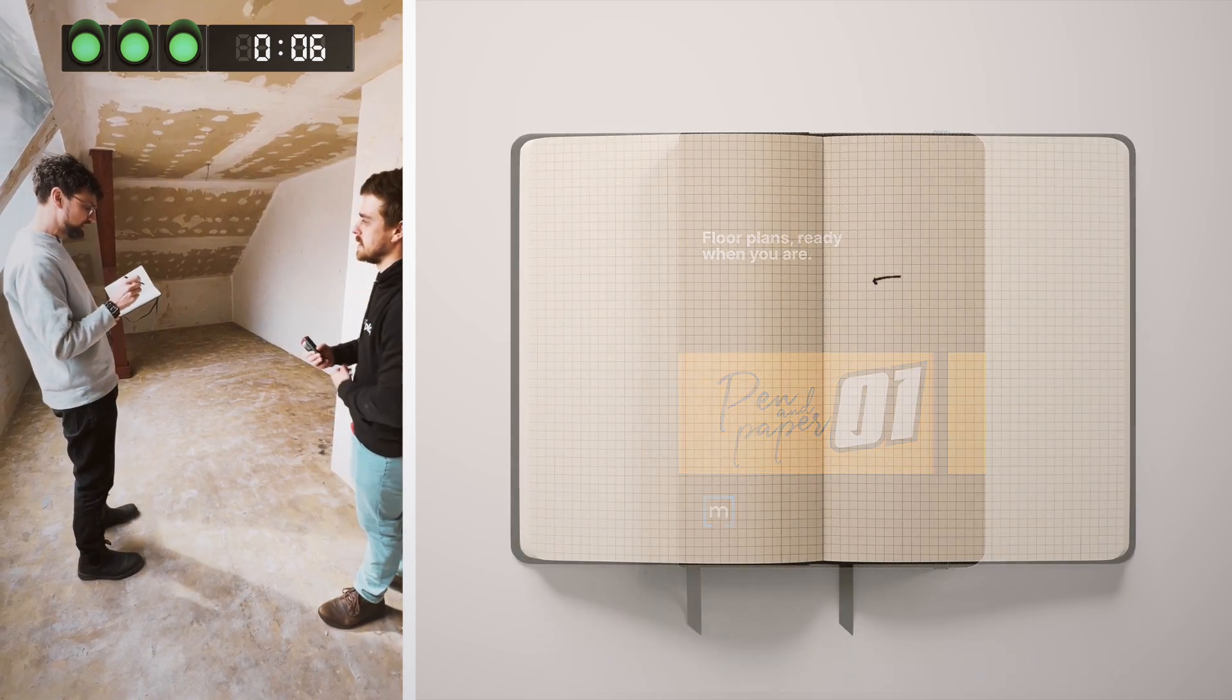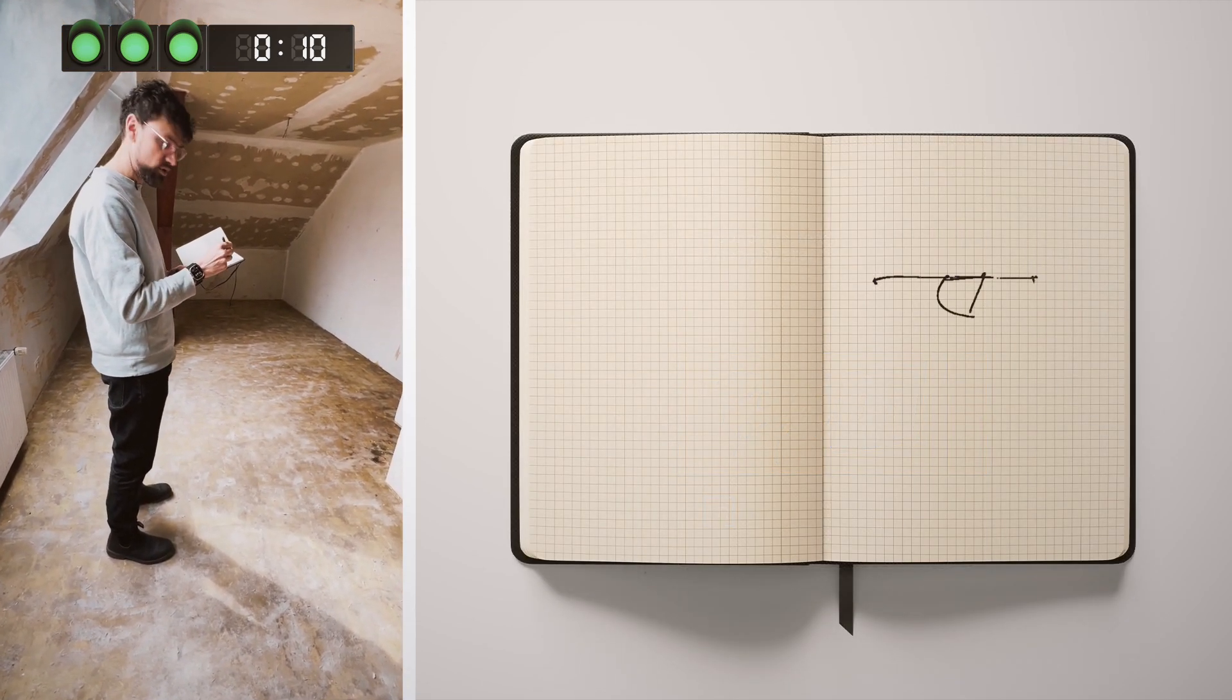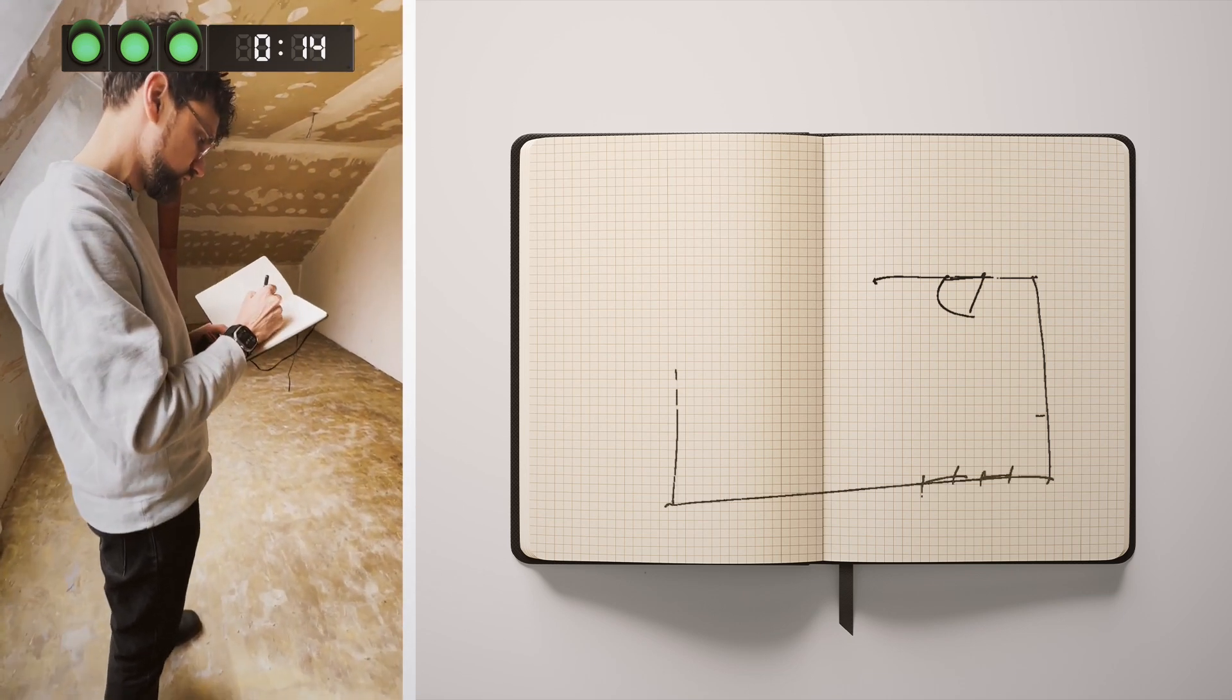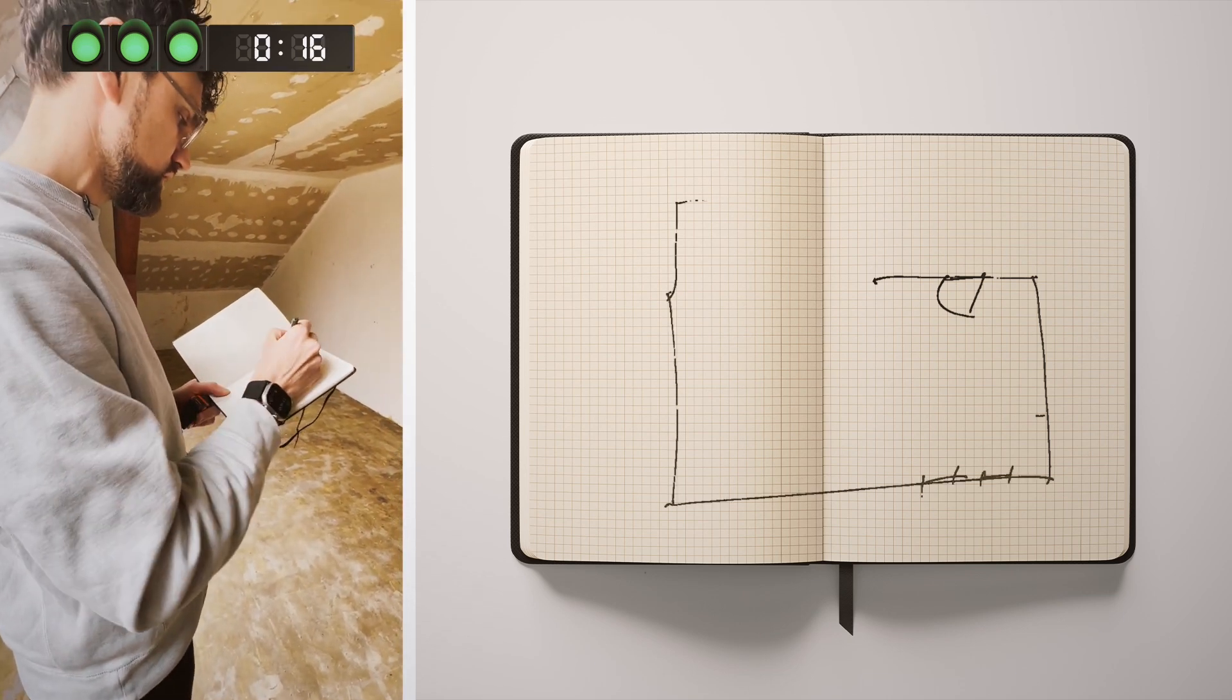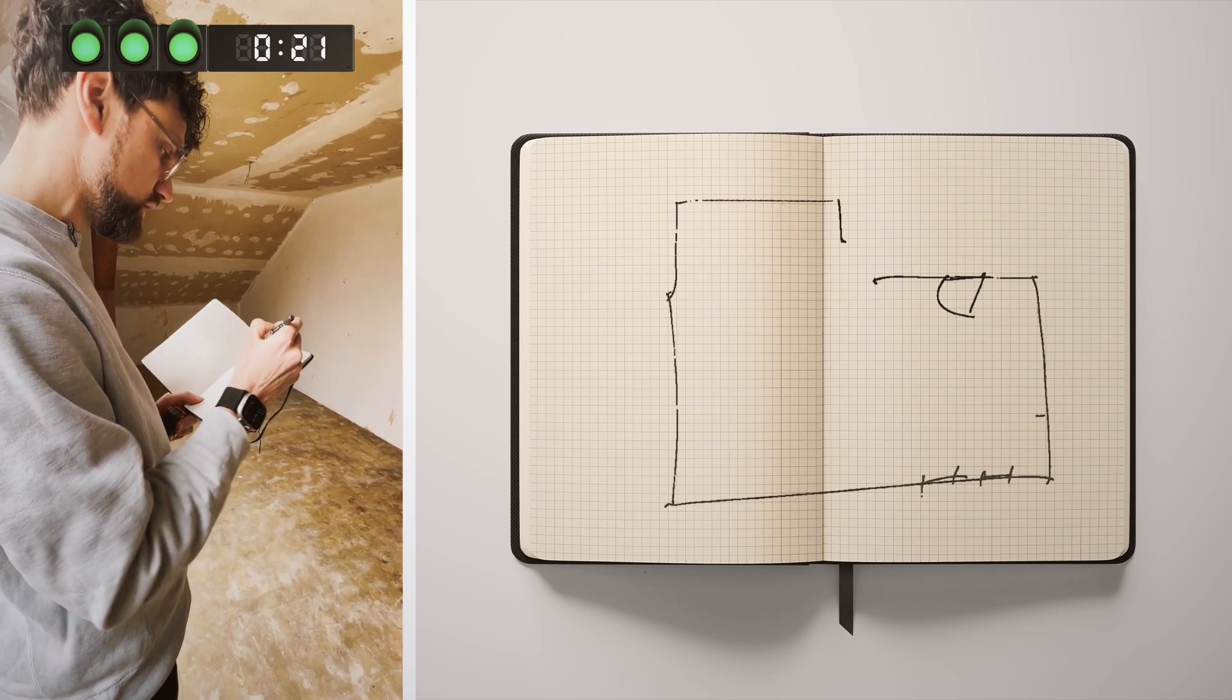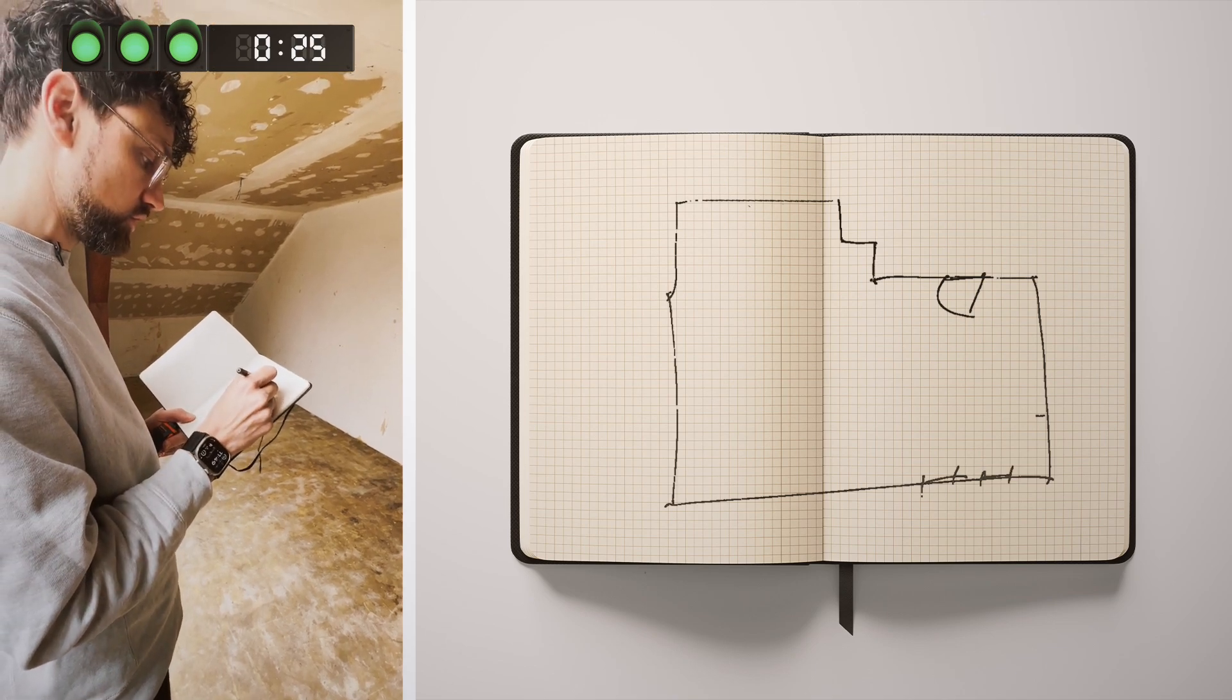So we have a basic shape here. We have one wall, another wall, another wall. Okay, now this extends here a little bit. Over there, down here. And I have one door that's opening.